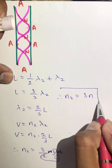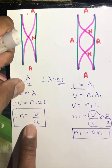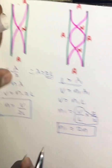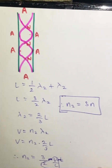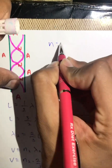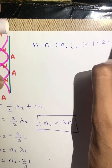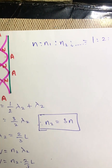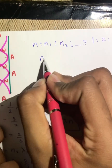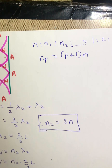To summarize the three equations derived: the first mode gives n = v/(2L); the second mode gives n₁ = 2n; and the third mode gives n₂ = 3n. So the frequency ratios are 1 : 2 : 3 and so on. For the pth overtone, the generalized formula is: n_p = (p + 1) × n.